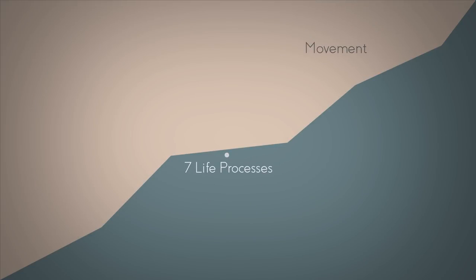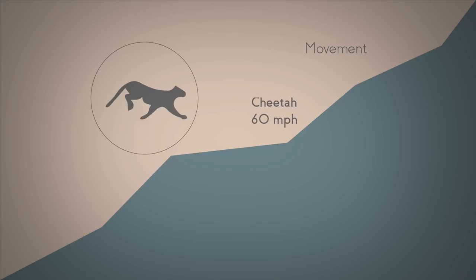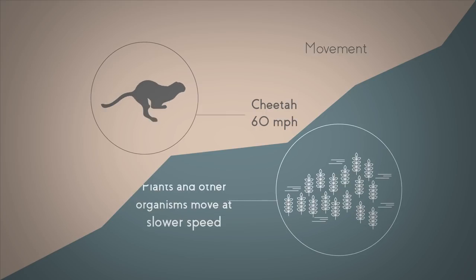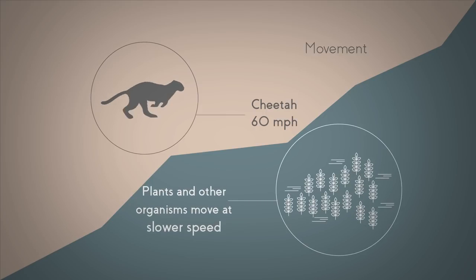The first is movement. Some organisms move very obviously, like a cheetah, the fastest animal on the planet, which can run at 60 miles per hour. Other organisms, like plants, move much more slowly, but all living things do move.